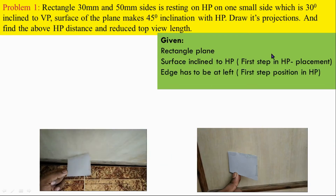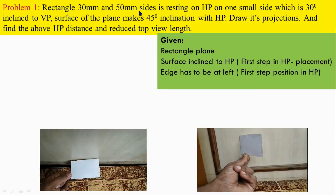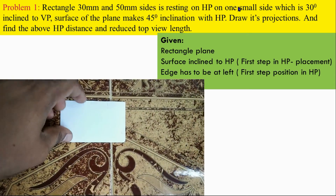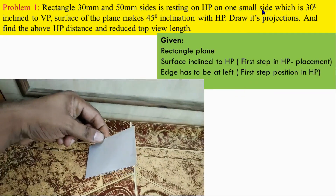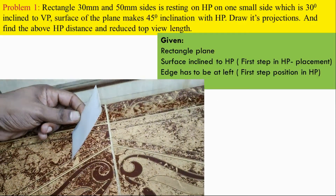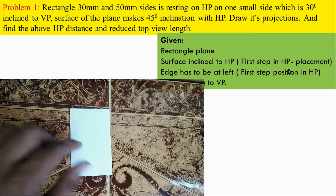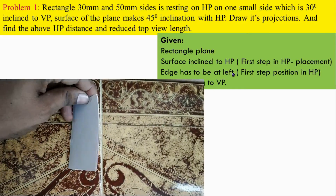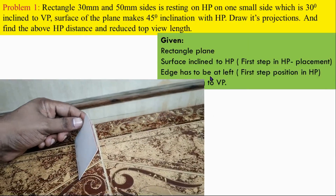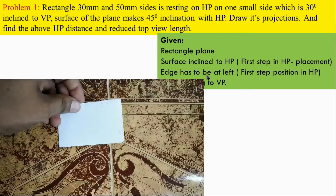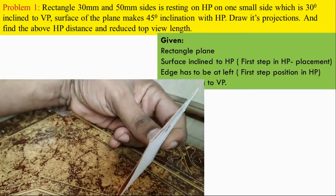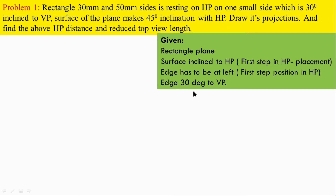The next important thing is to search the resting condition. Here one of the sides is resting, so that particular element has to be drawn on the left side of your first step. By positioning like this we can satisfy the given conditions. Whatever the resting condition — whether a corner or longer side is resting — it has to be on the left side. Also note that by positioning at the right side we can also proceed, but we need to tilt step three correctly. The next given is one edge inclined at 30 degrees to the vertical plane.